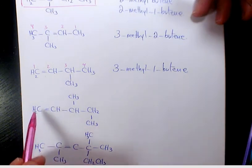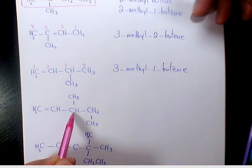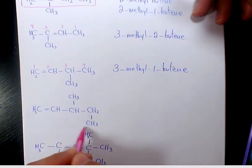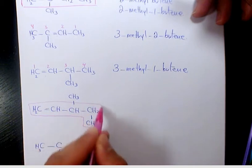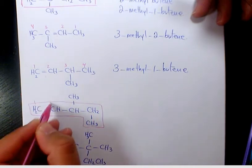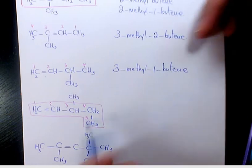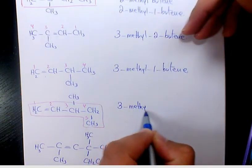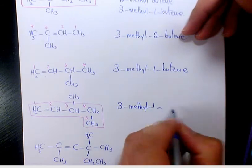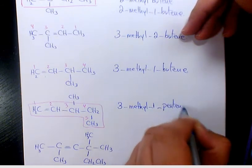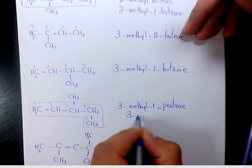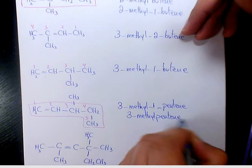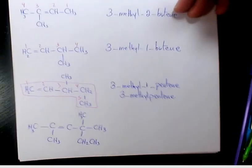One, two, three, four, and five. So this is the main one: one, two, three, four, five. So it's going to be 3-methyl-1-pentene, or 3-methyl pentene. Next one, the main one is this part.